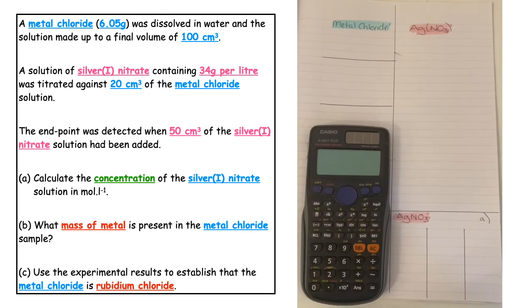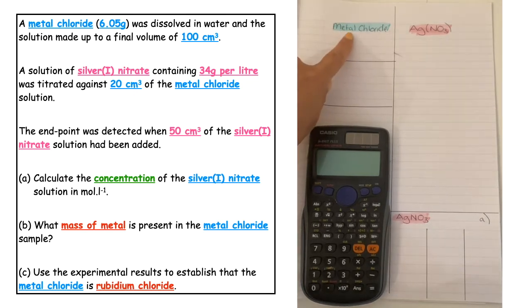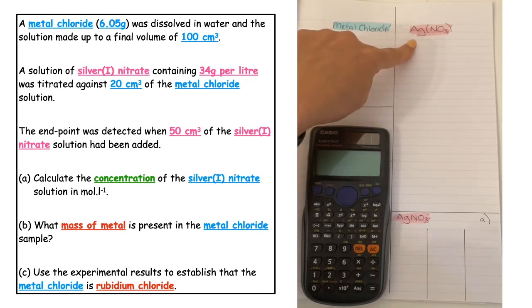Part A of this question wants us to calculate the concentration of the silver nitrate solution in moles per litre. For this, I'm going to do all my working for the metal chloride on the left hand side and all my working for the silver nitrate on the right hand side.